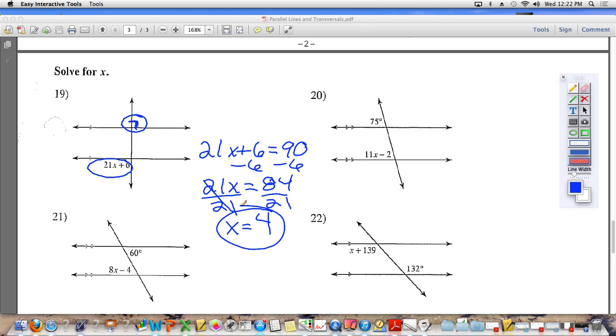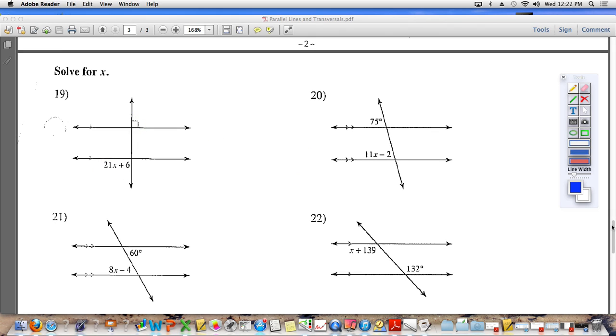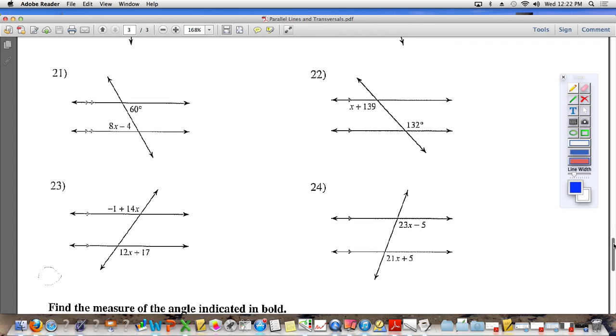Number 20, just like it, except that it's not 90 degrees. You're going to set the expression equal to what instead? 75. Good. Alright, 21, same thing. 22, the same thing. I am going to give you guys a chance to work on this. So for right now, I just kind of want you following along. There's a couple of other things I want to talk to you about, and then I'm going to set you guys free. Like birds.